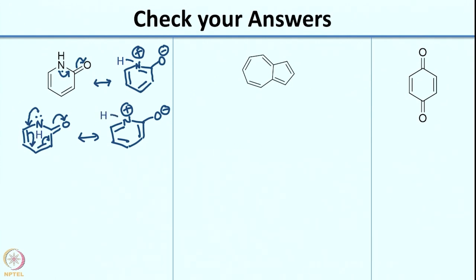Now, between all these structures, which would actually contribute the most? In both of these structures, I end up generating an aromatic centre and I have a negative charge on oxygen, which is an electronegative atom. So these structures would also contribute despite the fact that charge is generated.